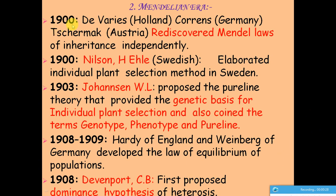In 1900, Hugo de Vries, Correns, and Tschermak rediscovered Mendelian laws through their own independent studies. They found that Mendelian laws were indeed valid and were actually ahead of their time. This rediscovery was a very important milestone in the history of genetics and plant breeding.